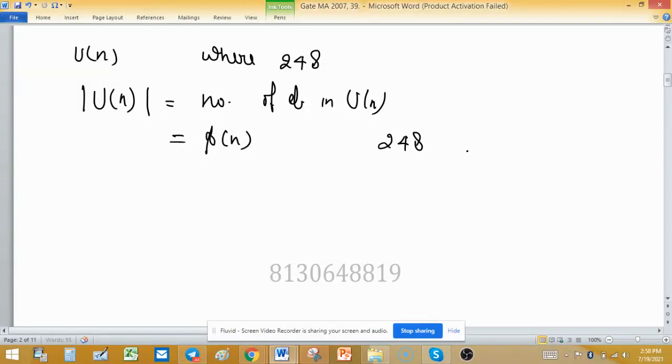So value of n is 248, so prime factorization of 248 is 2³ × 31. So φ(248) is equal to φ(2³ × 31).